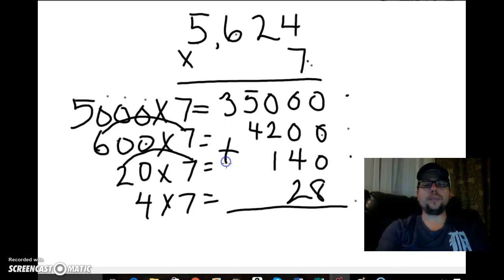And if I add those together, I'll get the solution, the product, for my original equation, 5,624 times 7.